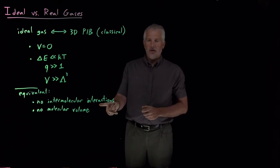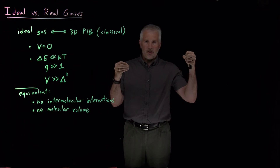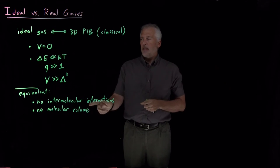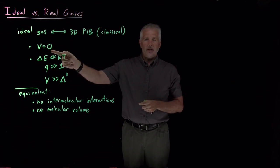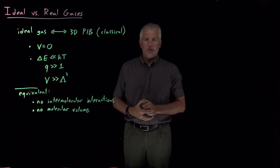These conditions are equivalent to the conditions we've imposed more mathematically when we derive the 3D particle in a box. For example, no intermolecular interactions, that's equivalent to saying the potential energy is zero. If the molecules were interacting, if molecule A were attracting molecule B, then that would be some potential energy that was non-zero, and we'd have to have included potential energy as well as kinetic energy when we solve the Schrödinger equation.